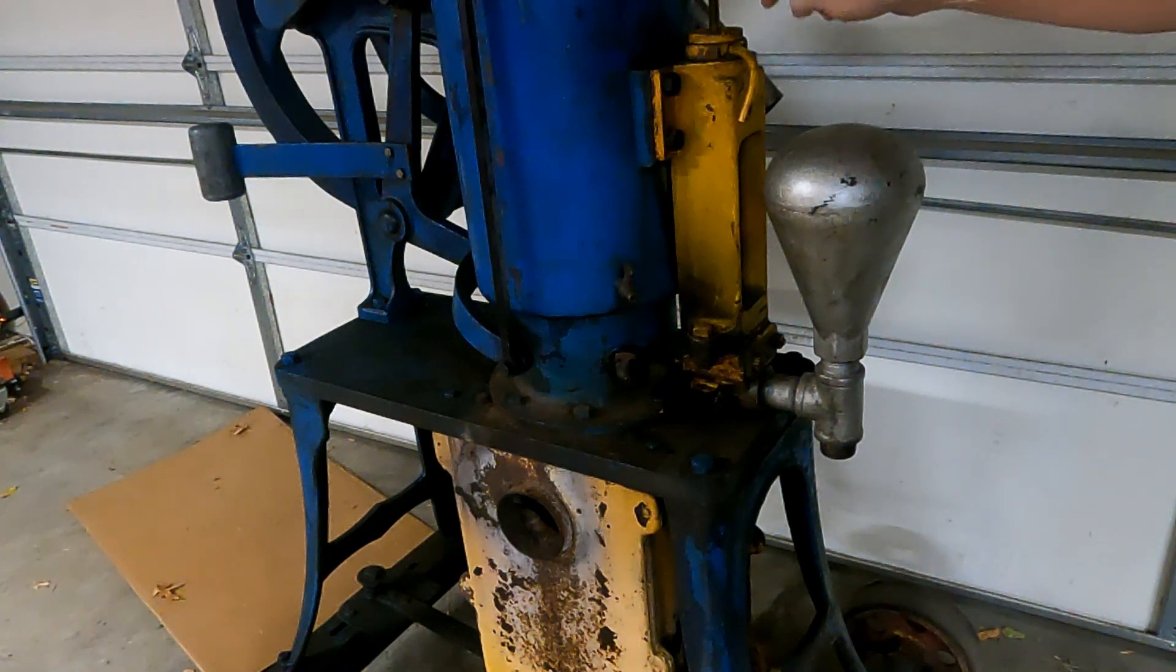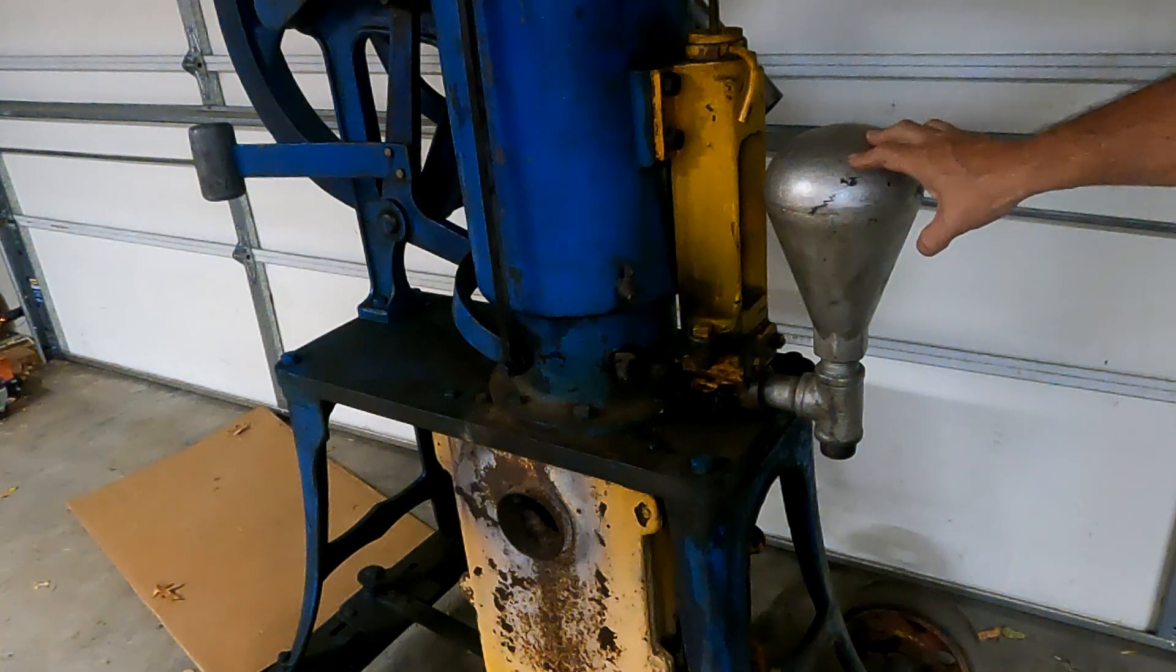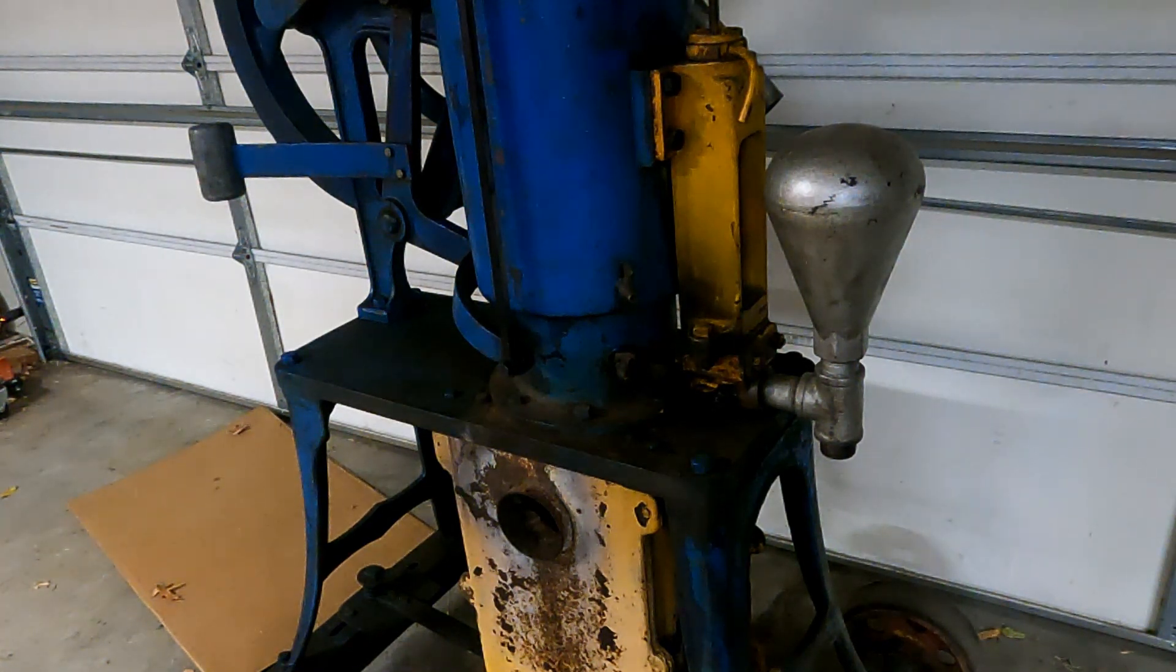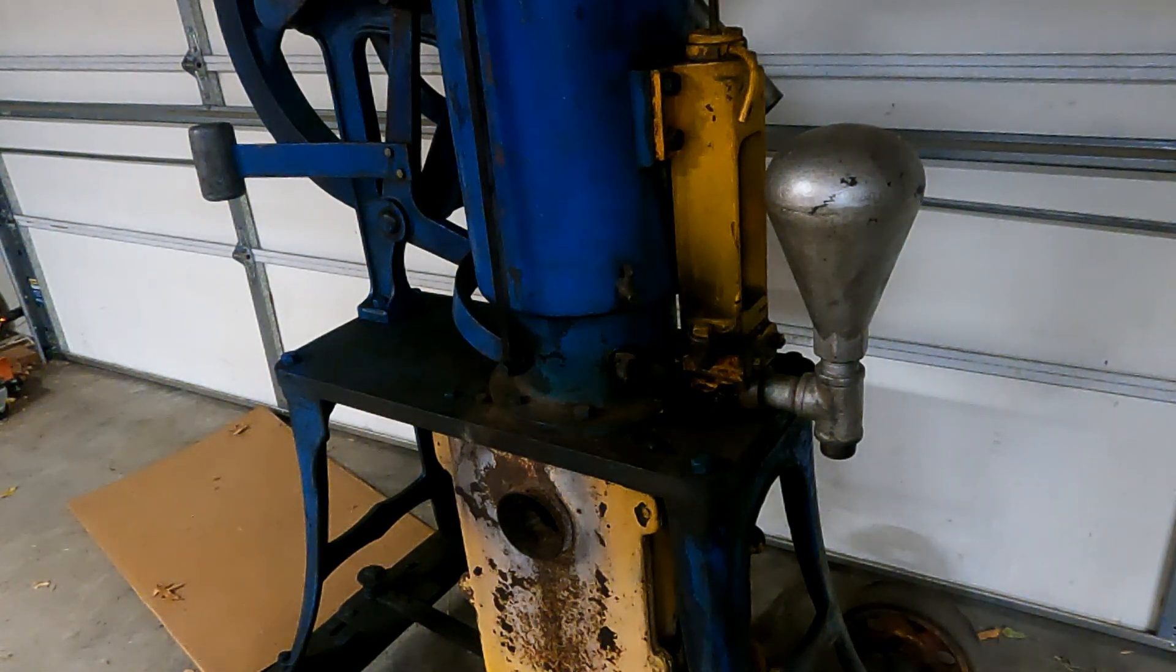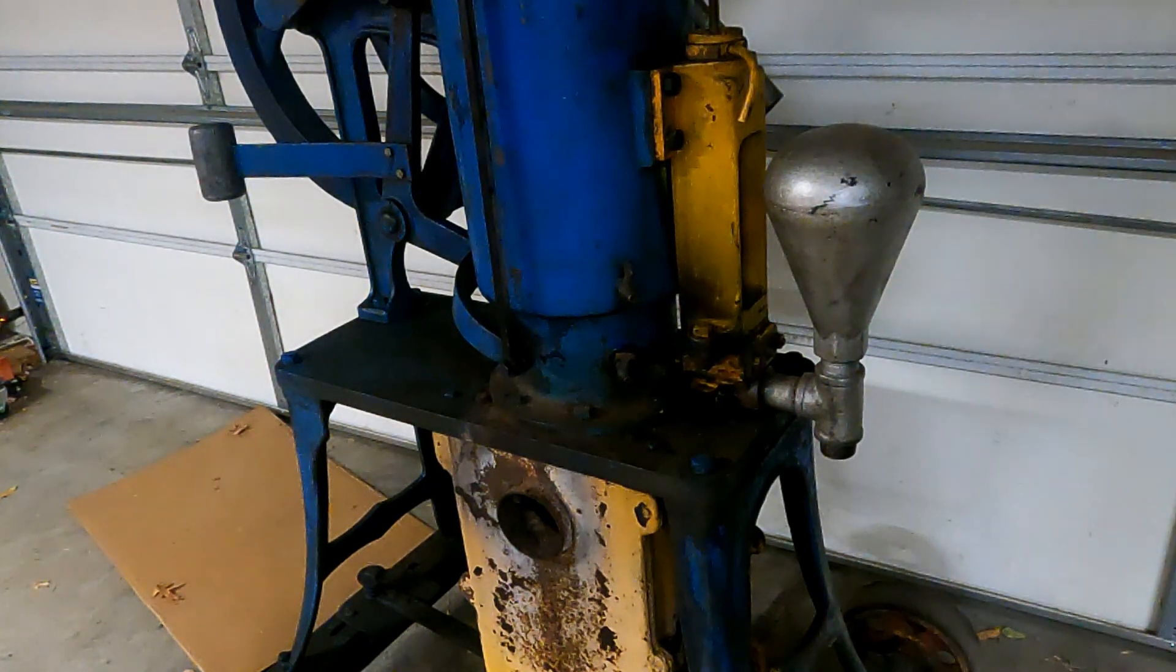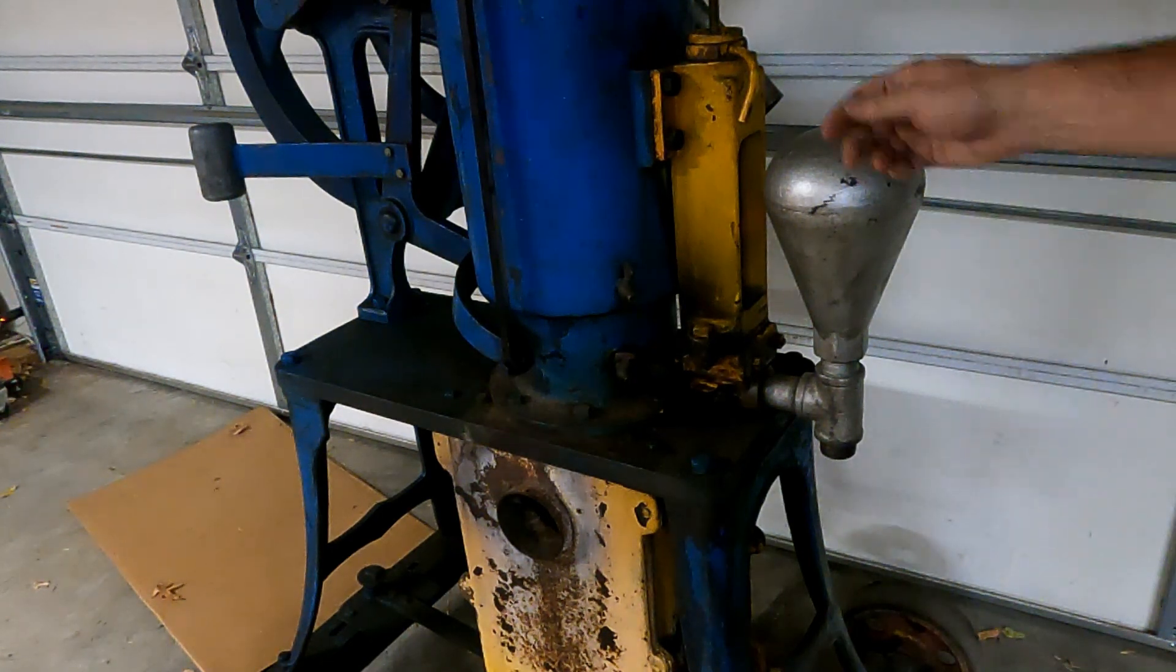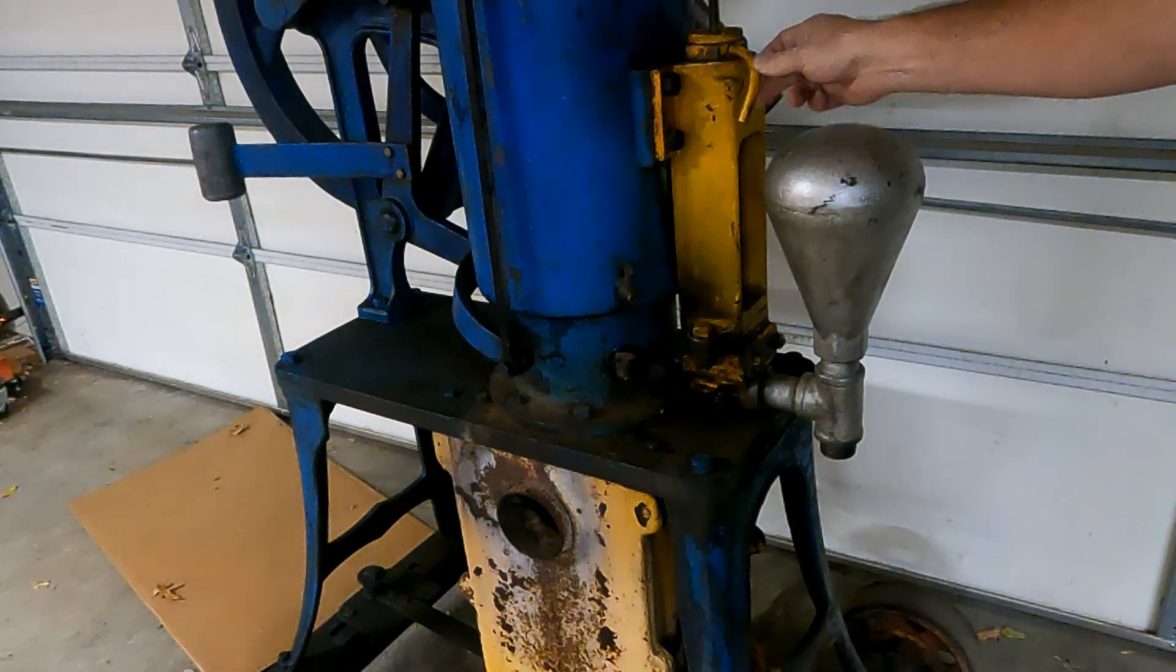This pump, when it pumps, is going to surge and make some vibration. With these long pipes running up the side of the house, it would make some noise in the house, so these smooth that flow out and kind of dampen that pulsing sound.